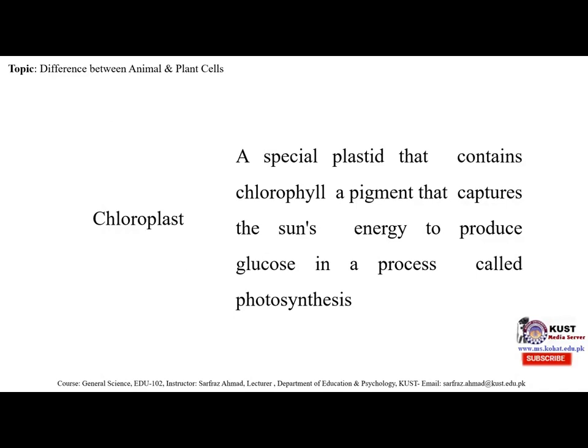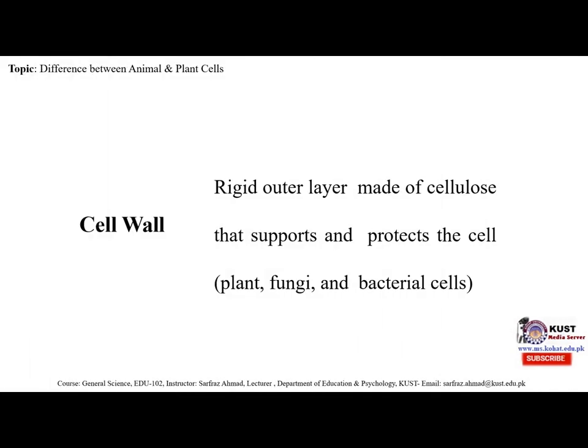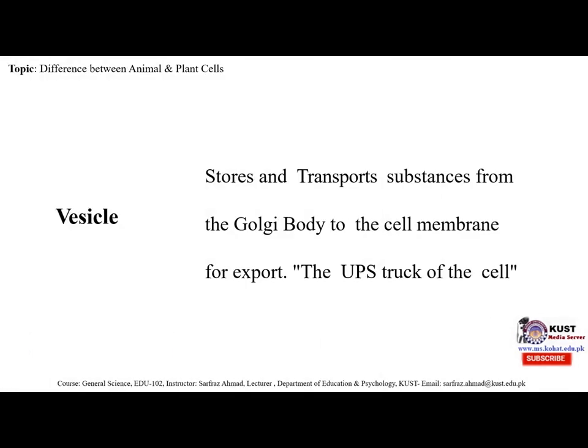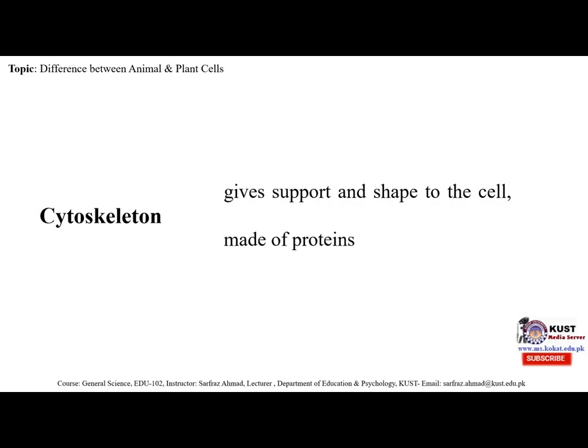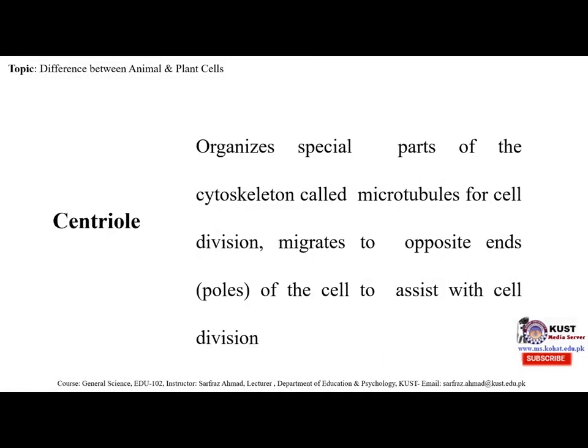A chloroplast is a special plastid that contains chlorophyll pigment, which captures the sun's energy to produce glucose in a process called photosynthesis. Cell walls are rigid outer layers made up of cellulose that support and protect cells like plant, fungi, and bacterial cells. Vesicles store and transport substances from the Golgi body to the cell membrane for export. The cytoskeleton gives support and shape to the cell and is made up of protein. Centrioles organize the cytoskeleton's microtubules for cell division and migrate to opposite poles of the cell to assist with cell division.